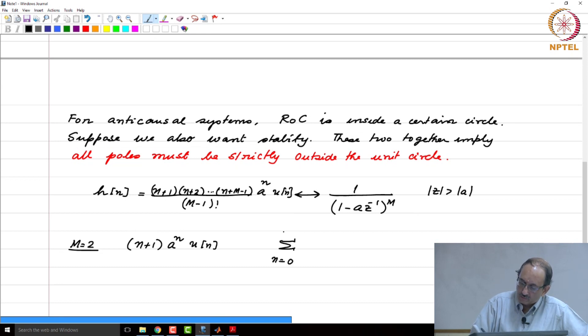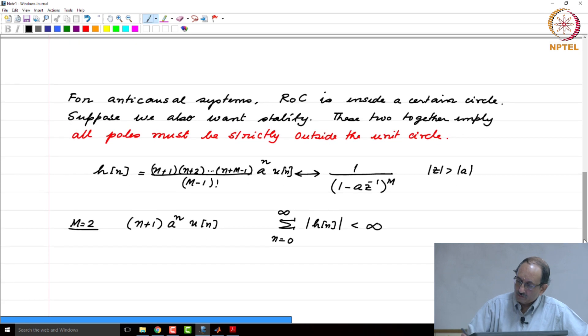Therefore, this is less than infinity, where h of n corresponds to n plus 1 times a to the n. We are looking at the behavior of n times a to the n u of n and this decays to 0 as n tends to infinity.